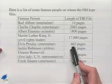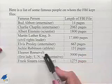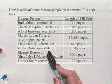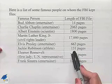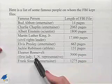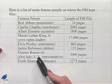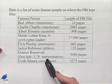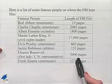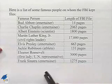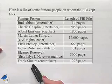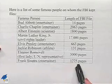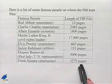Jackie Robinson, an athlete, had 131 pages. Eleanor Roosevelt, the First Lady and a U.N. representative, had 3,000 pages. Frank Sinatra, an entertainer, had 1,275 pages.